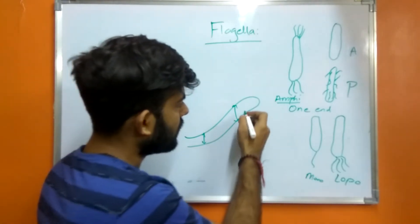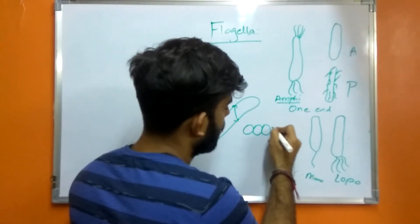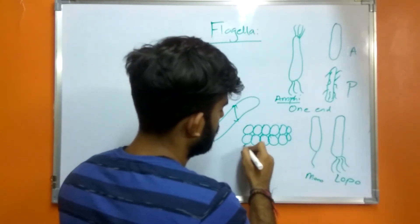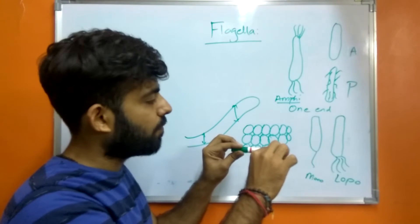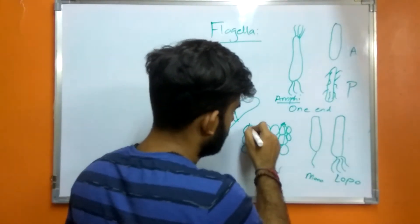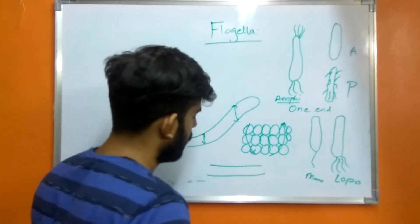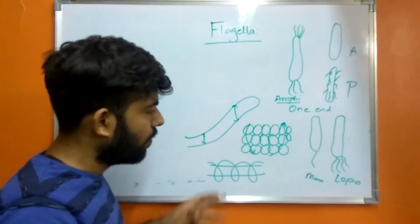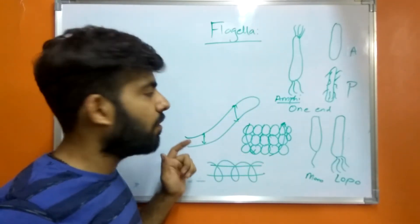To simplify: the filamentous region of a flagellum is made up of a globular protein — flagellin — which forms bundles that are intertwisted and form a helical arrangement around a hollow core. In eukaryotic cells, the flagellum is further coated by a sheath, but in prokaryotes it is not coated by a sheath.